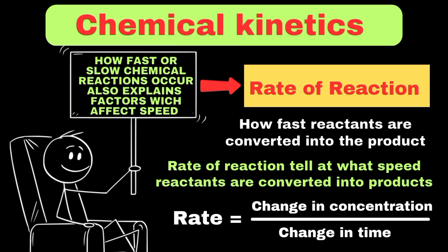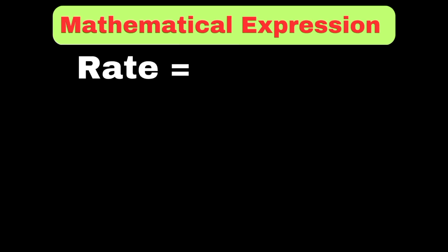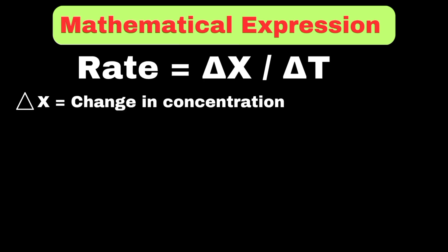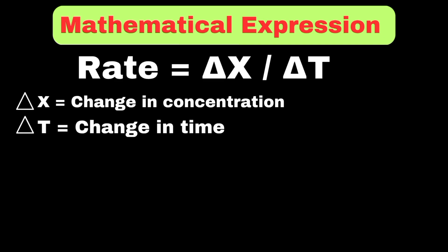Mathematically, the rate of reaction is equal to delta x divided by delta t. Here, delta x refers to the change in concentration of reactants or products, and delta t refers to the change in time.